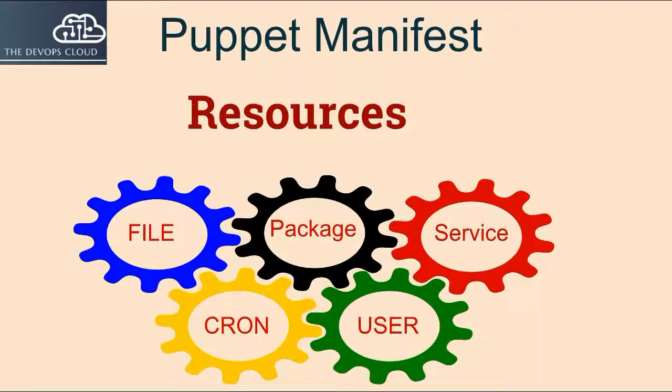By default, Puppet applies resources in the order they're declared in their manifest. However, if a group of resources must always be managed in a specific order, you should explicitly declare such relationships with relationship meta-parameters, chaining arrows, and the require function. For example, a file resource or service resource may have a dependency on the package resource.